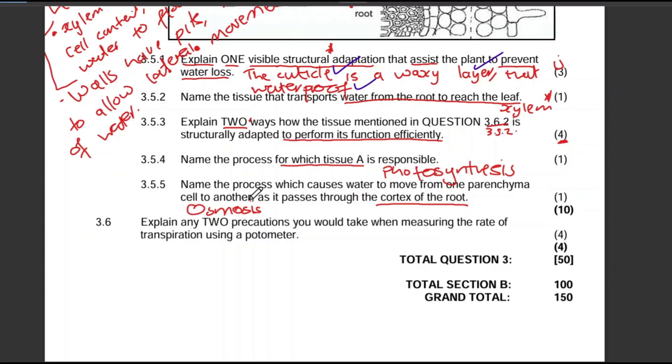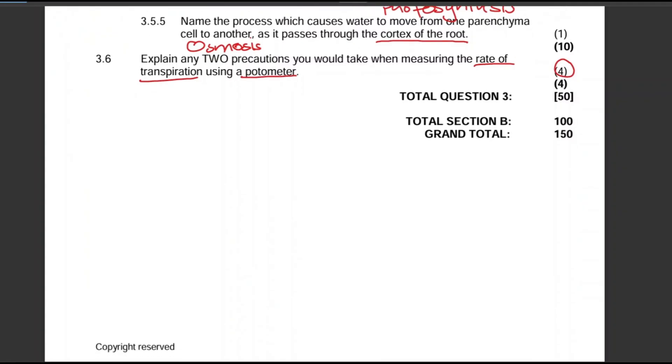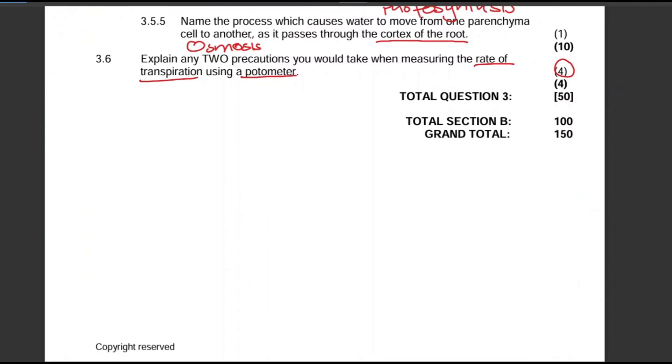Question 3.6: Explain any two precautions you would take when measuring the rate of transpiration using a potometer for four marks. Let's not skip these questions. I know whenever you see a question with more than two marks you're like 'this is difficult.' You must practice these questions - that's why we're having these videos so you can practice, know how to answer them, and get maximum marks.